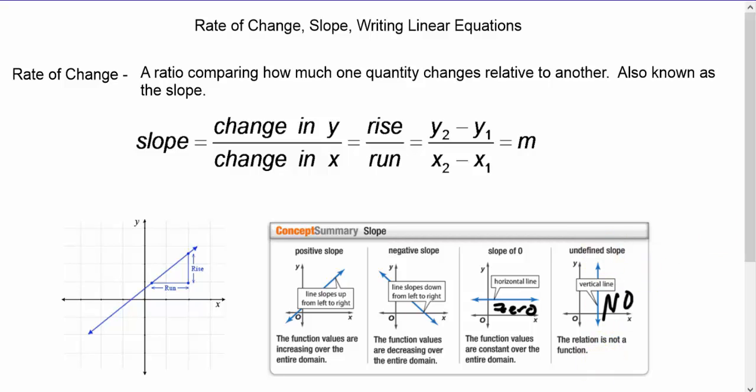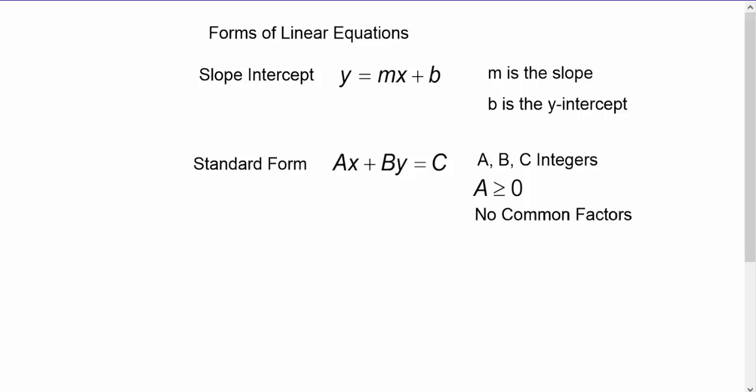We've got a couple different forms for linear equations. One is slope-intercept: y = mx + b, where m is the slope and b is the y-intercept. x and y are just variables.